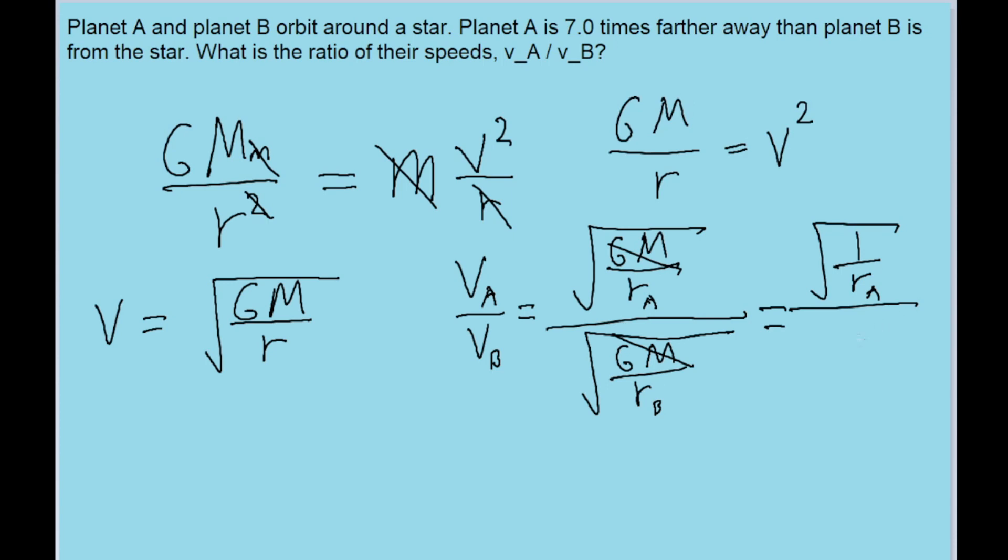So we're left with the square root of 1 over RA to the square root of 1 over RB. And because of the way this is set up now, we can simplify it, we can make this look much prettier by flipping it, so instead I'll write it as equal to the square root of RB over RA.